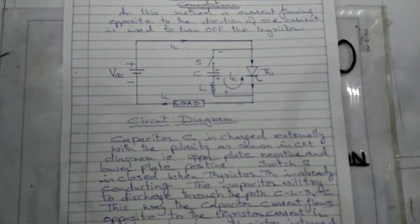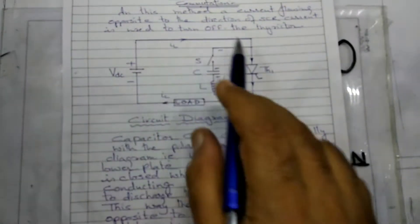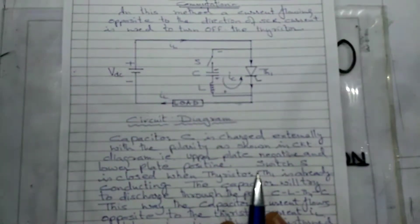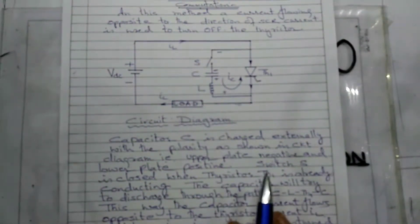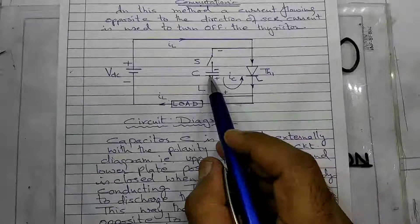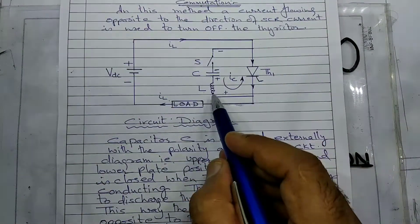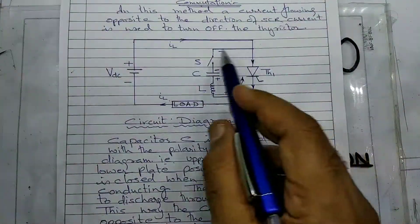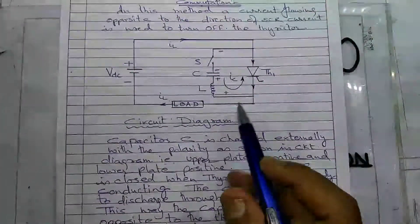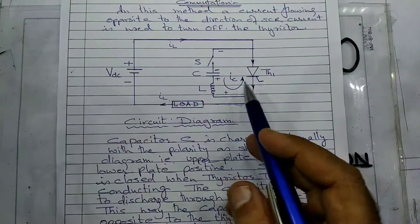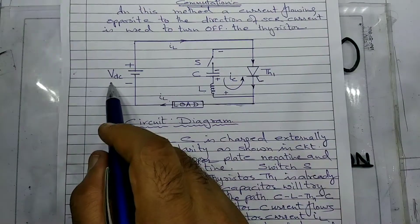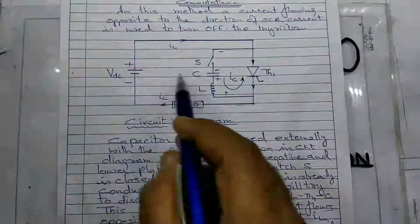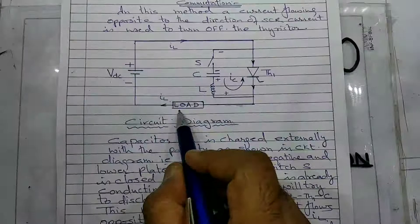This circuit is used for current commutation. Here a capacitor is connected with an inductor in a small circuit across the thyristor, and a DC source VDC is used along with the load in series.